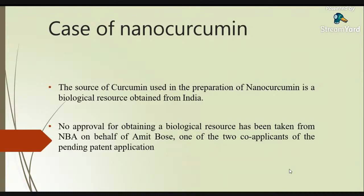The patent applicant Amit Bose did not take permission from the National Biodiversity Authority regarding use of the biological source. As an innovator and scientist, he was required to obtain permission from the National Biodiversity Authority of India before using any biological source. He did not take any such permission, yet proceeded to apply for a patent for his invention.